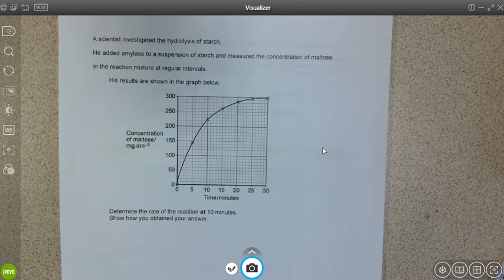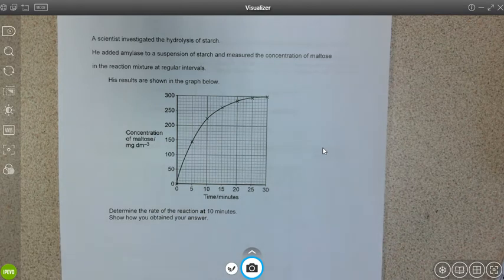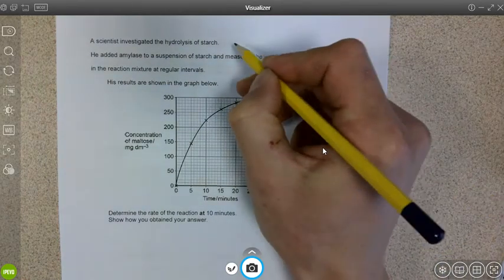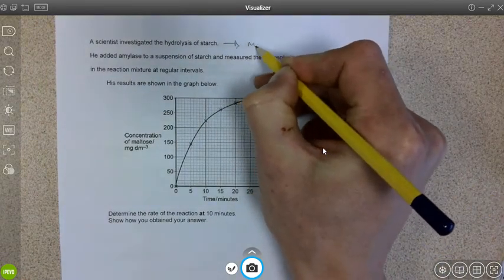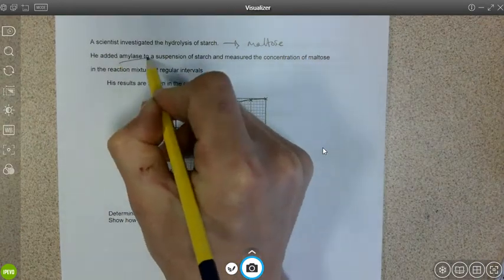We'll begin with this example. It involves a scientist investigating the hydrolysis of starch, so starch being hydrolyzed into maltose by the enzyme amylase.